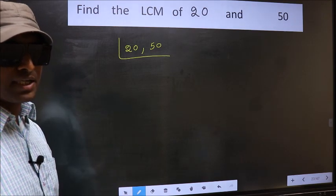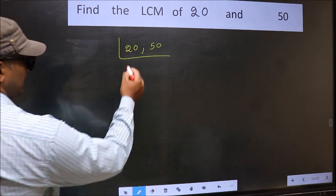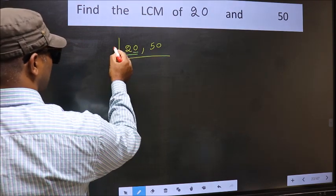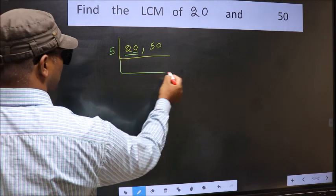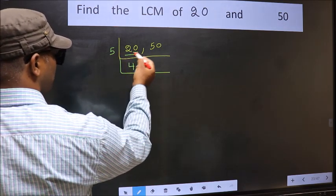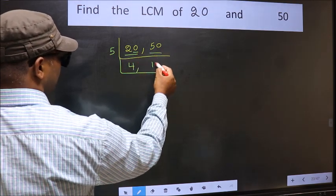Now you should focus on the first number which is 20 here. For this number, last digit 0, so directly take 5. When do we get 20 in 5 table? 5, 4 is 20. The other number 50. When do we get 50 in 5 table? 5, 10 is 50.